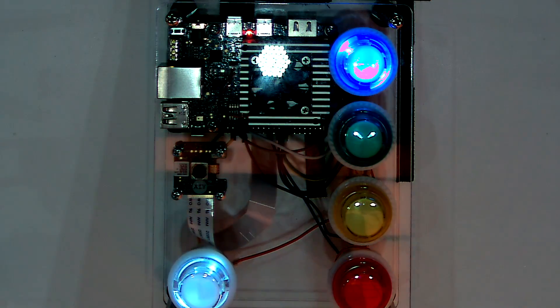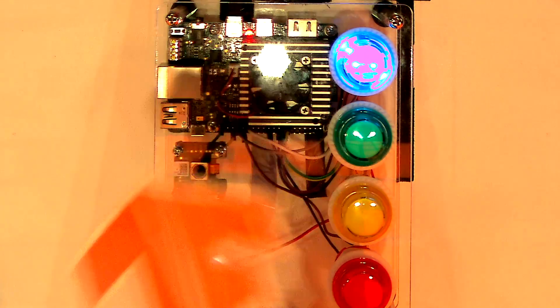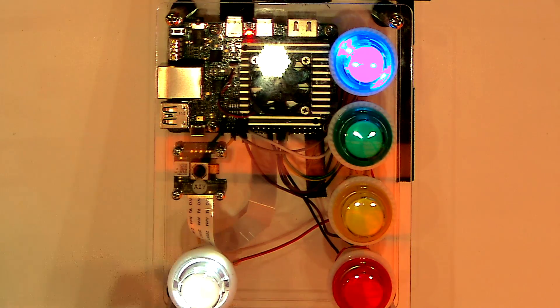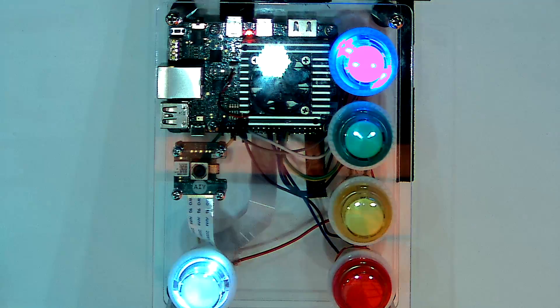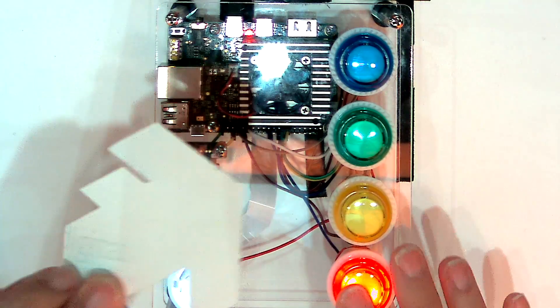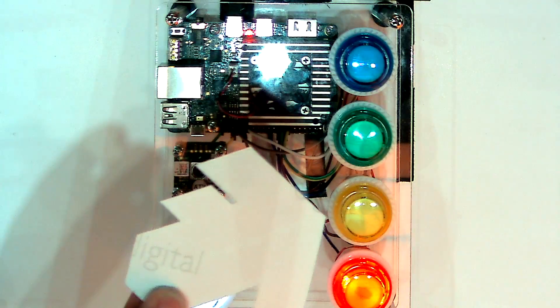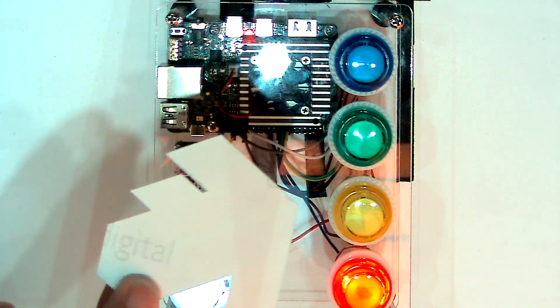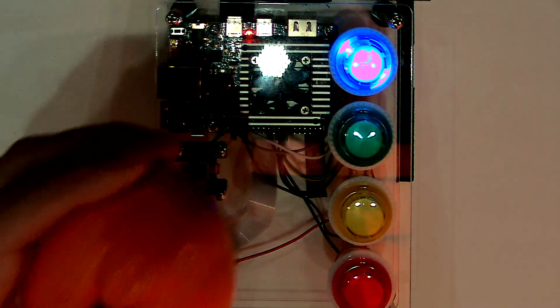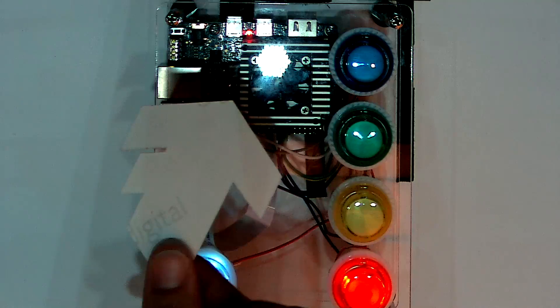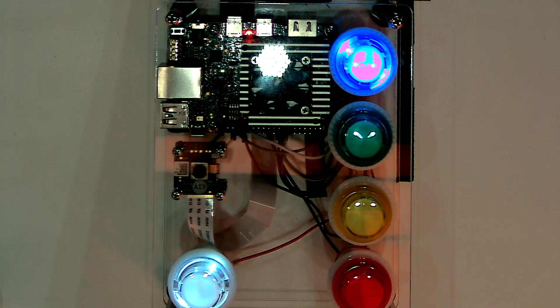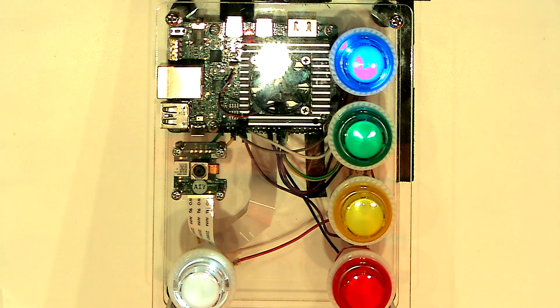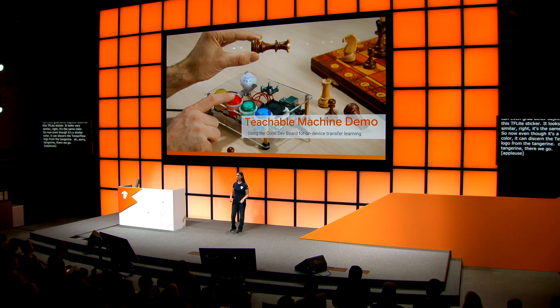I can even grab other objects — for instance, this TF Lite sticker. It looks very similar, right? It's the same color. But even though it's a similar color, the system can still discern the TensorFlow Lite logo from the tangerine. So you can imagine that in a manufacturing context, operators with no knowledge of machine learning or training can adapt your system easily and quickly using this exact technique.